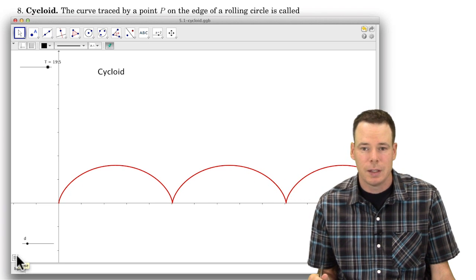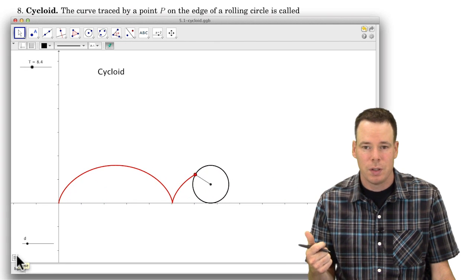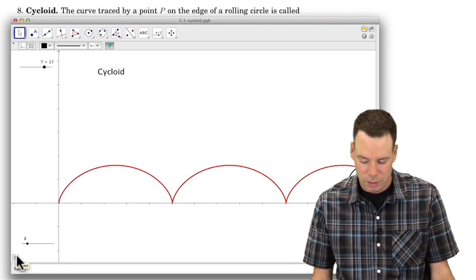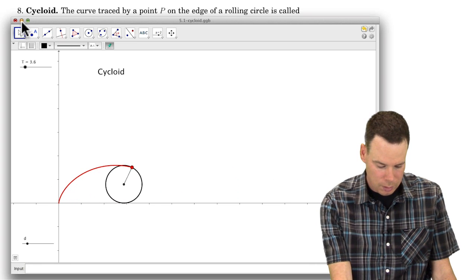We're interested in finding a parametrization of this curve. What is a function which describes how the x-coordinate and the y-coordinate change? And what is an appropriate use of a parameter in this case? So let's go ahead and do that.